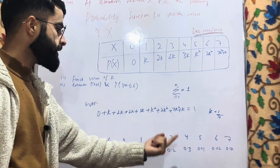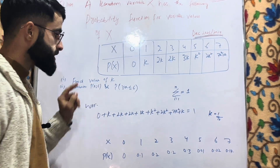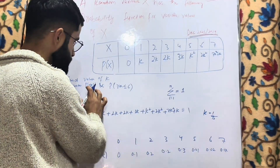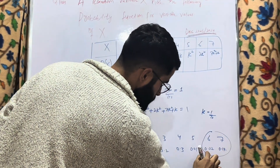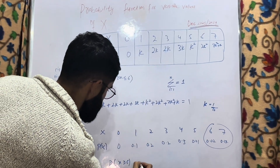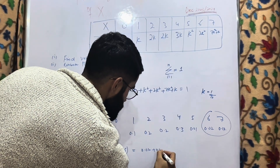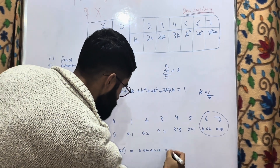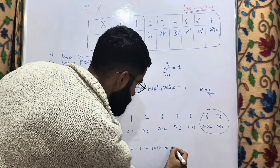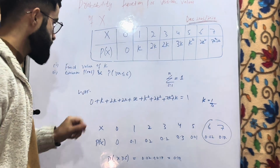For P(X ≥ 6): this includes X = 6 and X = 7. So P(X ≥ 6) = P(X=6) + P(X=7) = 0.02 + 0.17 = 0.19. That is the answer for the probability that X is greater than or equal to 6.